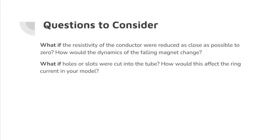Some questions to consider. What if the resistivity of the conductor were reduced as close as possible to zero? How would the dynamics of the falling magnet change? If the resistivity of the conductor were reduced as close as possible to zero, the forces pushing the magnet in the upward direction would increase until it stops the magnet from falling through the tube altogether.